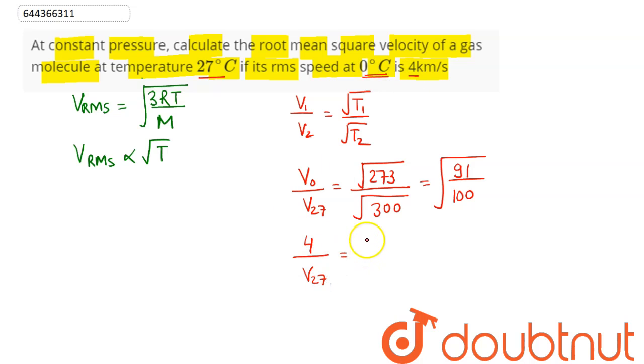Hence we can say on simplification, speed at 27 is equal to, on calculation this comes out near to 4.19 kilometer per second.